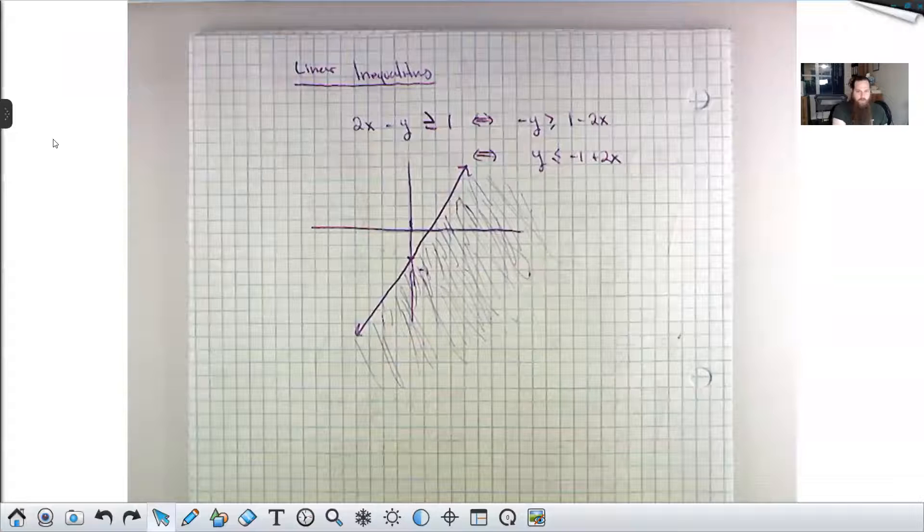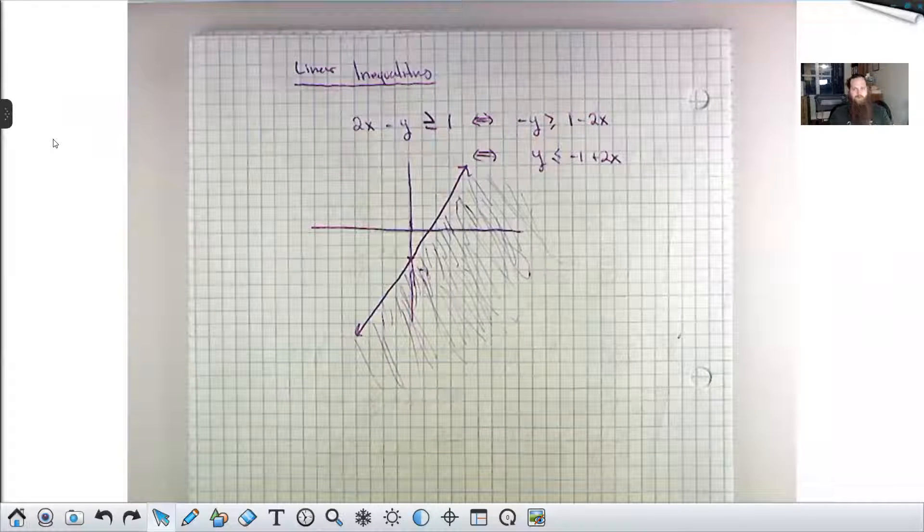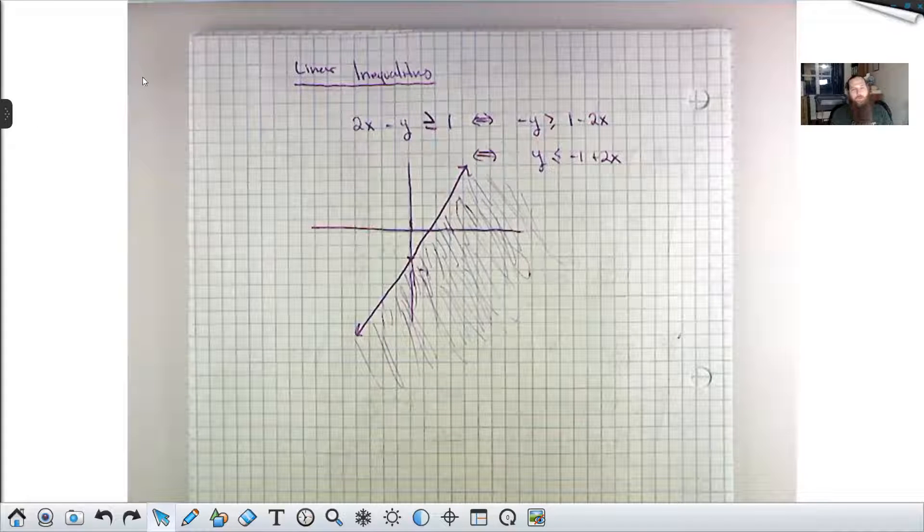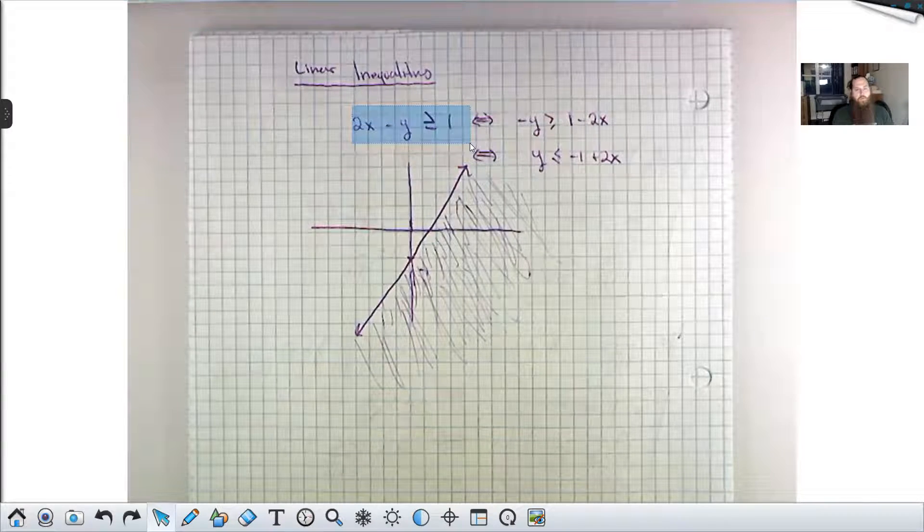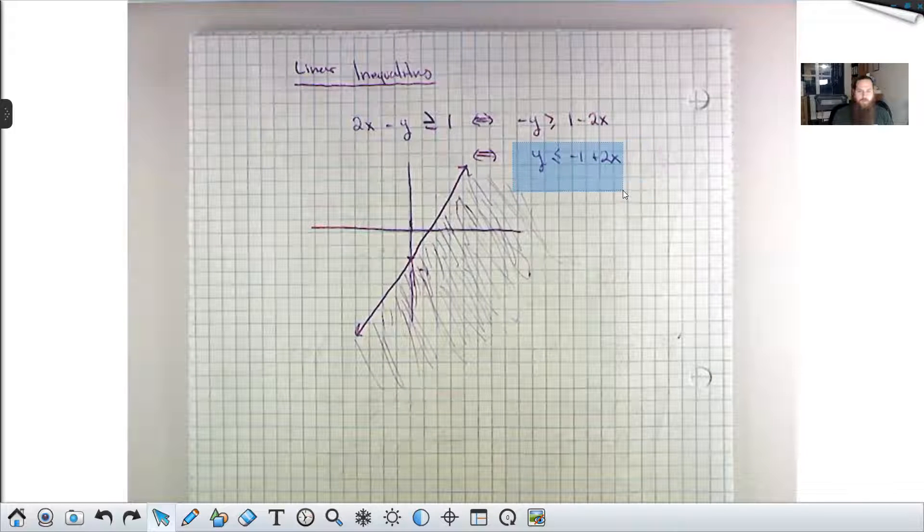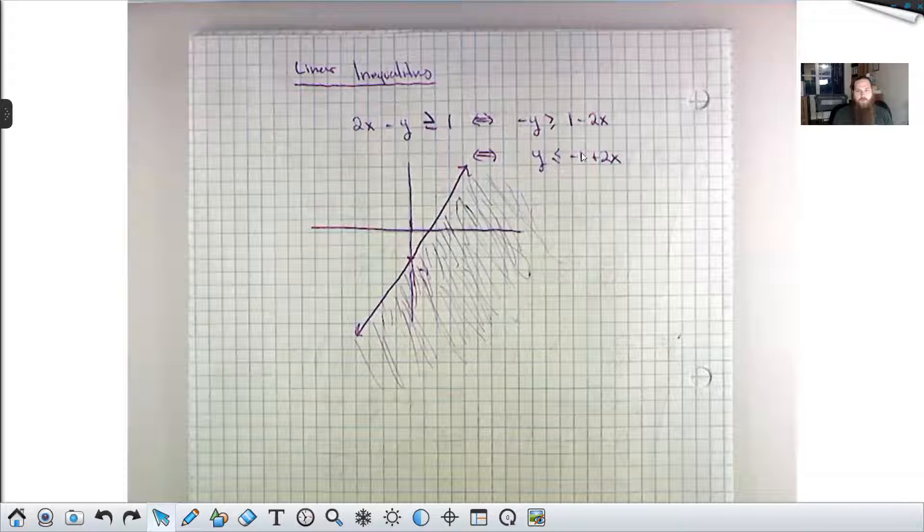But I'm going to bring us back over here to the lovely land of linear inequalities, where we were graphing y is less than or equal to negative 1 plus 2x, which was really what we got from this inequality. We put it into this form so we can see what the line looked like. The slope here is 2, and the y-intercept here is negative 1.